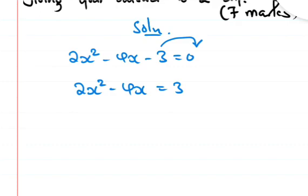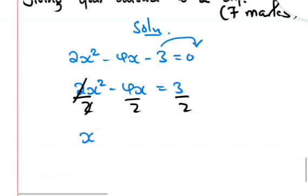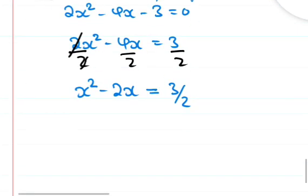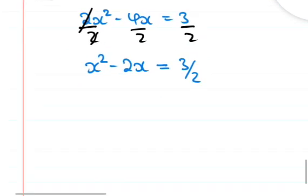The second step is to remove the coefficient of x squared. When you remove the coefficient, divide everything by 2. You will then have x squared minus 2x on the left hand side, which is the coefficient over 2. Now we need to add half of this coefficient.